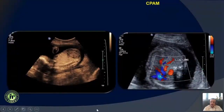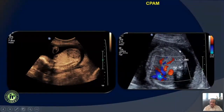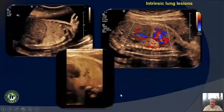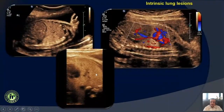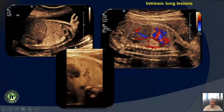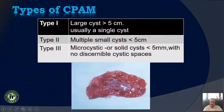The diagnostic feature of CPAM is that the blood flow comes from the pulmonary artery and venous drainage also is from the pulmonary veins. So whenever we see masses like this — here for example, filling up an entire lung — it is very important to look at the blood flow.